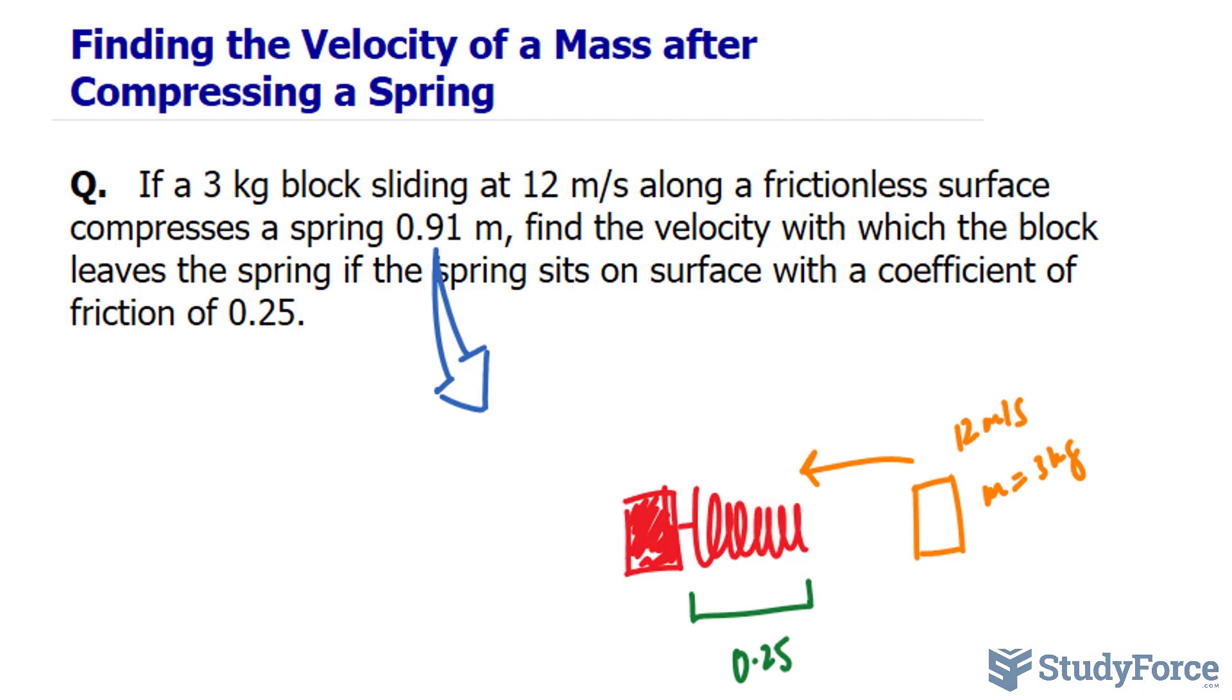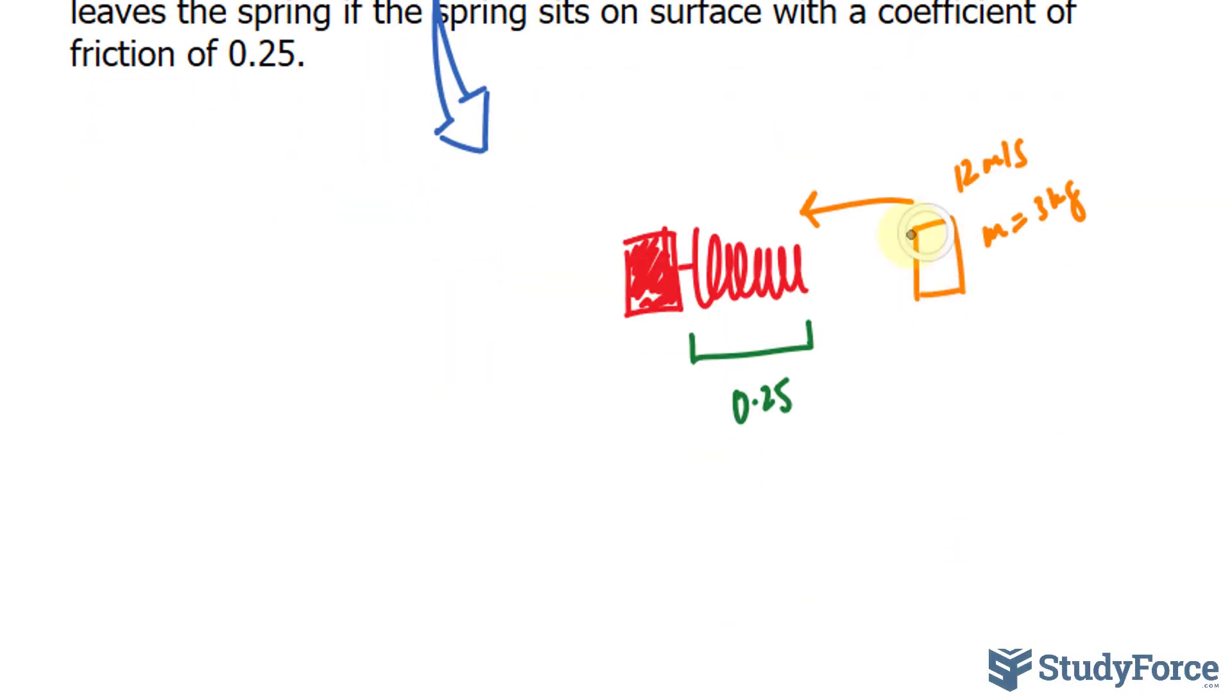With that being said, we want to know the moment this spring stops compressing. Let me redraw it right here. And here it is compressed. We want to know the speed at which this mass, this one right here, which is represented in purple in this illustration, the speed at which it shoots backwards.